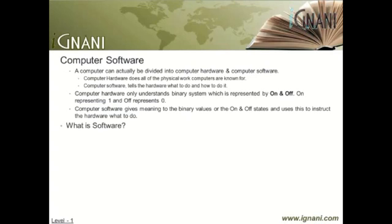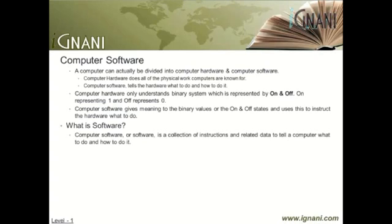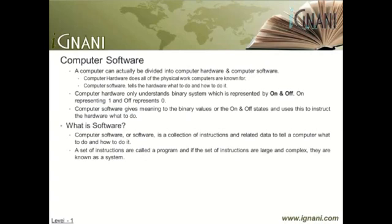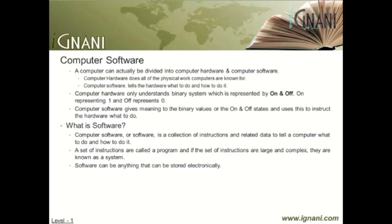So then, what is software? Computer software, or software, is a collection of instructions and related data to tell a computer what to do and how to do it. A set of instructions is called a program, and if the set of instructions is large and complex, it is known as a system. Software can be anything that can be stored electronically. The term software was coined to contrast with the term hardware, meaning physical devices. In contrast to hardware, software is intangible, meaning it cannot be touched. Software is sometimes used in a more narrow sense, meaning application software only, while it can also include data.